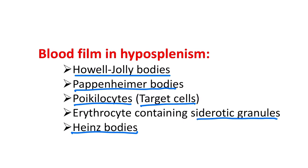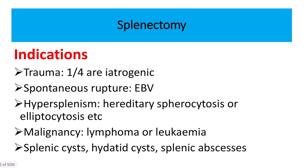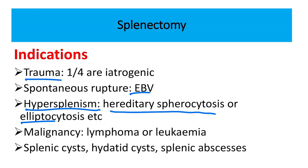To summarize: Howell-Jolly bodies, Pappenheimer bodies, poikilocytes or target cells, sideroblastic cells, and Heinz bodies are key post-splenectomy findings. There are different indications for splenectomy: trauma, which is the most common cause, spontaneous rupture due to Epstein-Barr virus, hypersplenism, hereditary spherocytosis or elliptocytosis, and some malignancies.